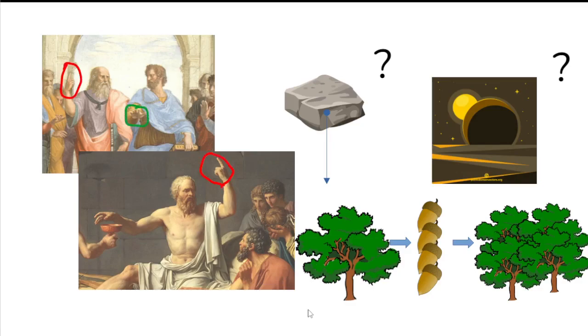Thus, Aristotle introduced empiricism against the opinion of his master, Plato. This allowed Aristotle to discover some laws of physics correctly, but he also made serious mistakes.